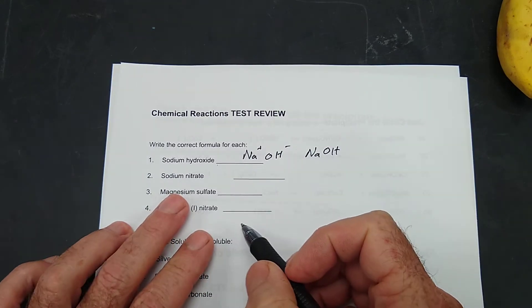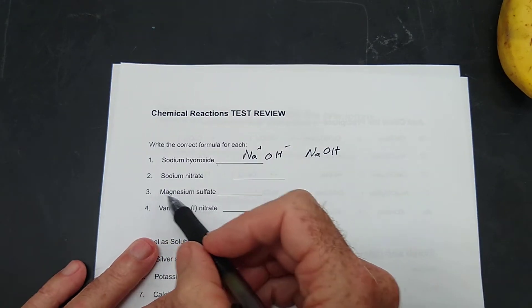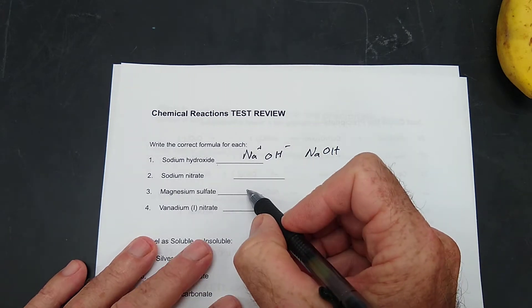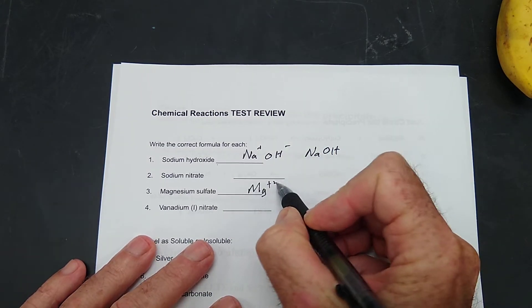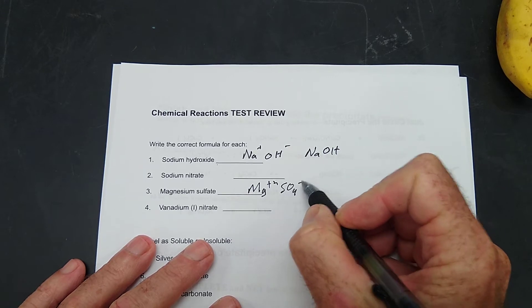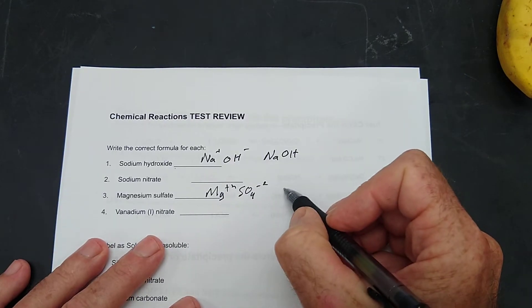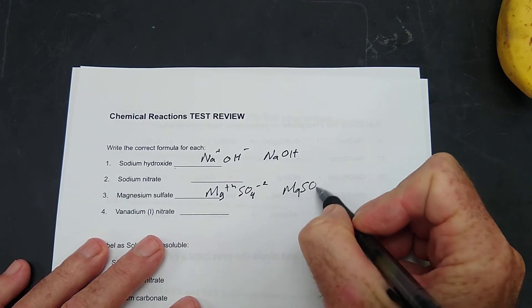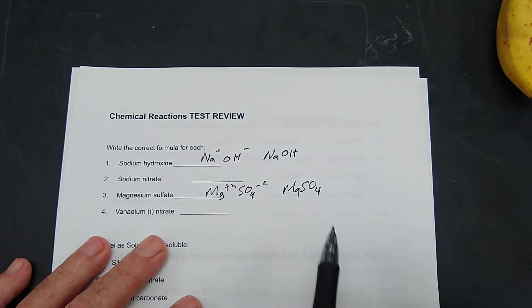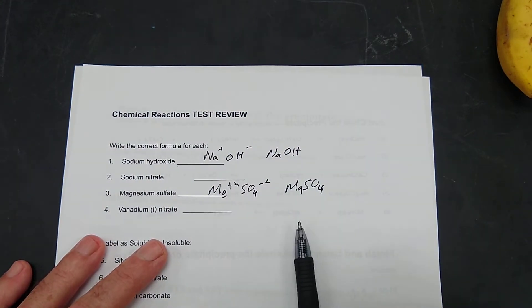How about magnesium sulfate? Magnesium is plus two, sulfate is minus two, so that's just MgSO4. That works. Those are easy. All of these look very easy.